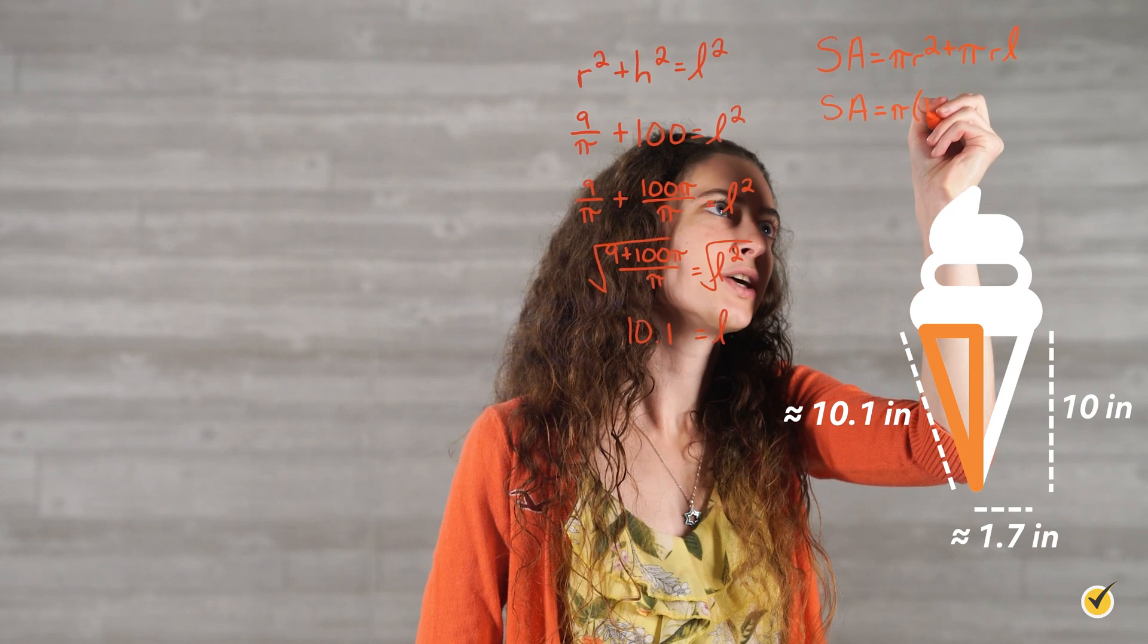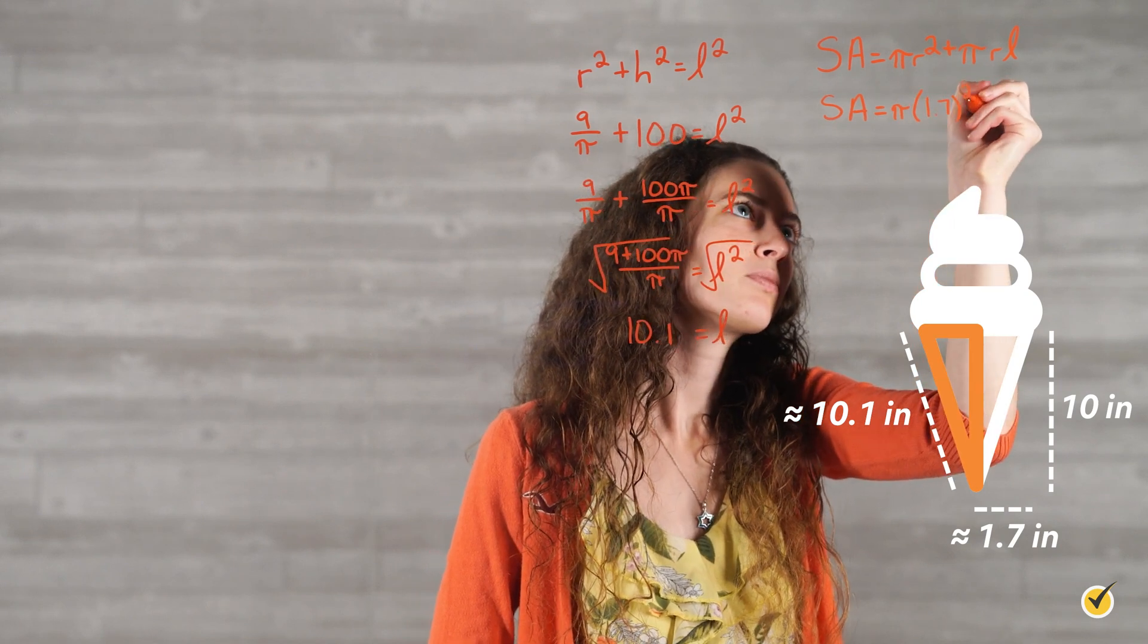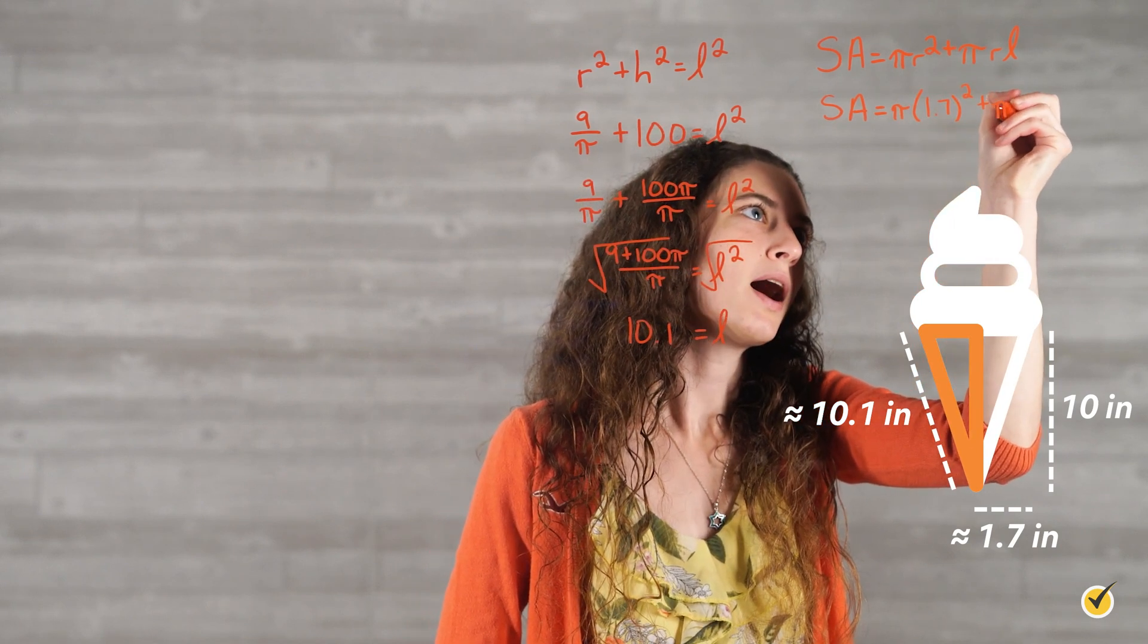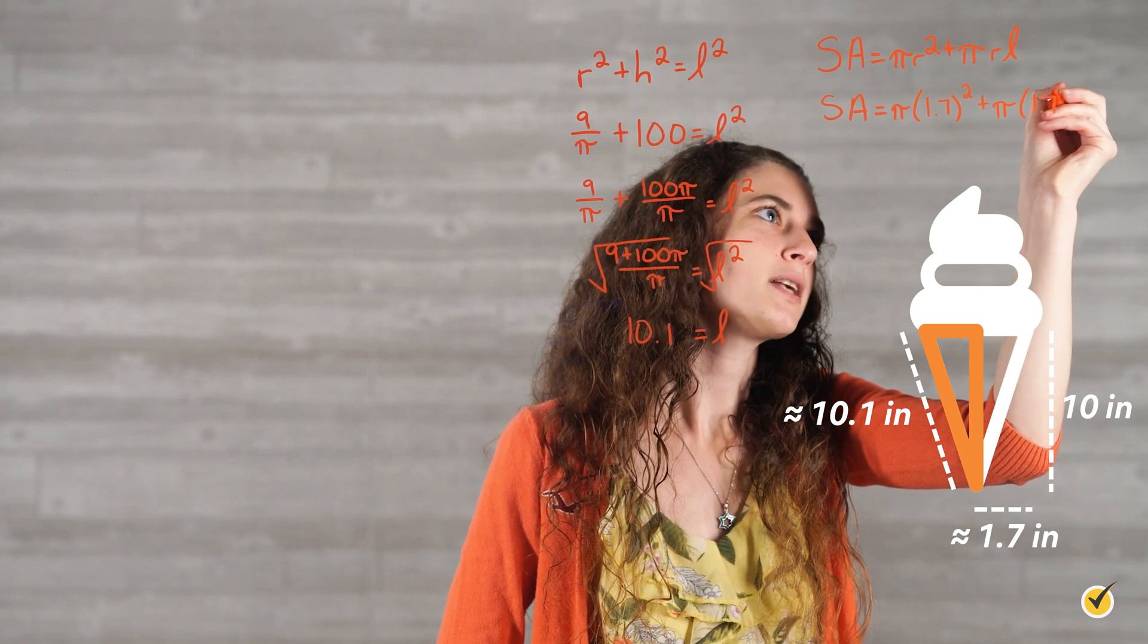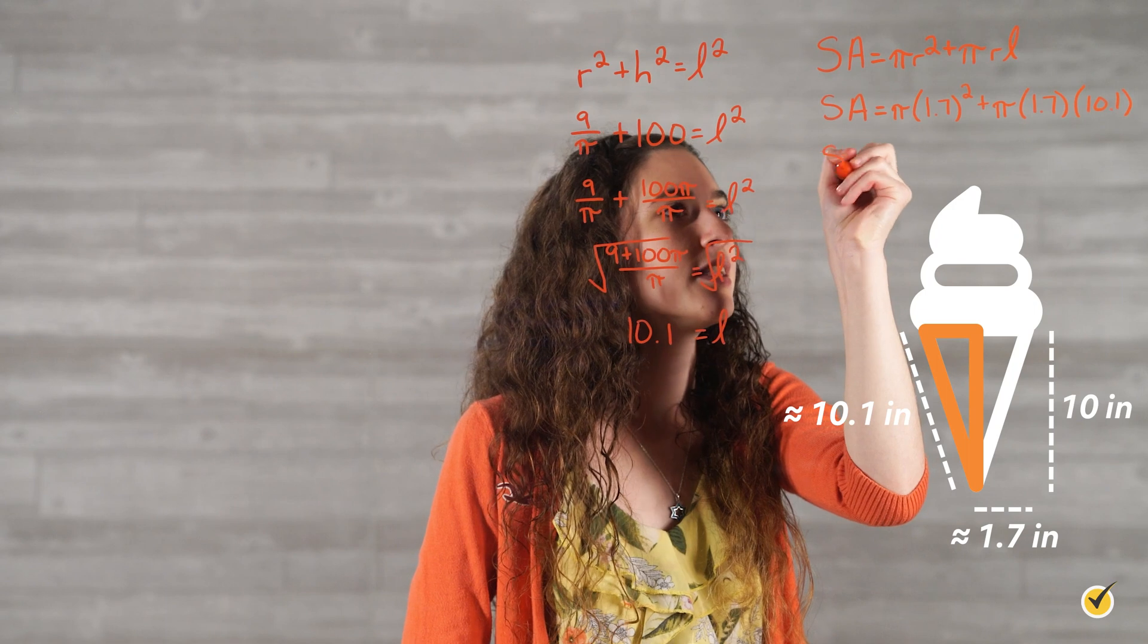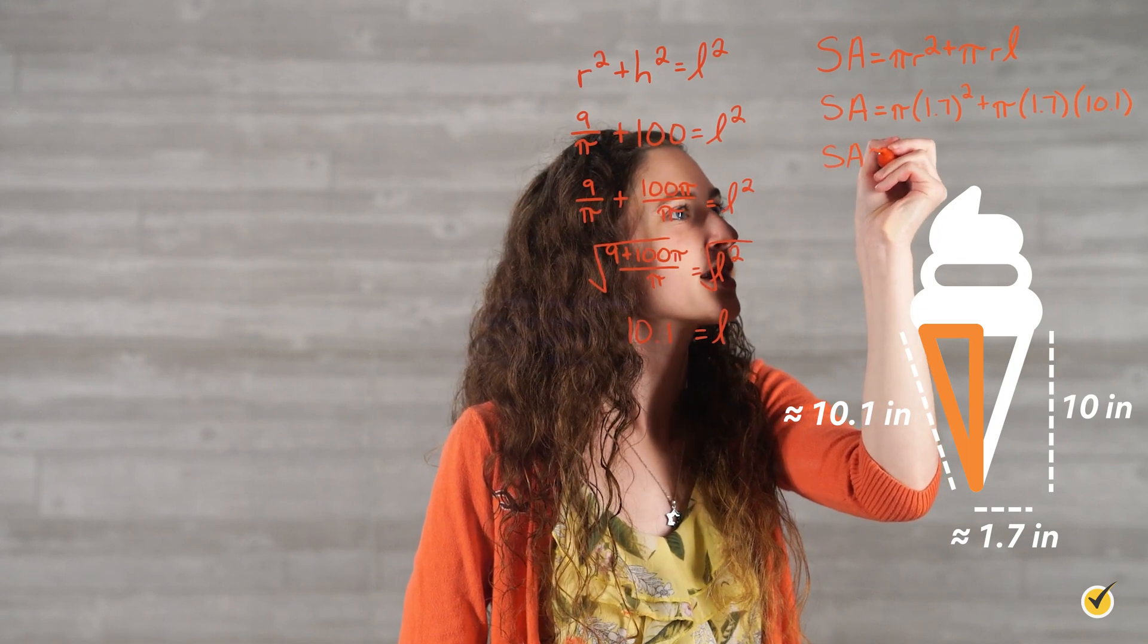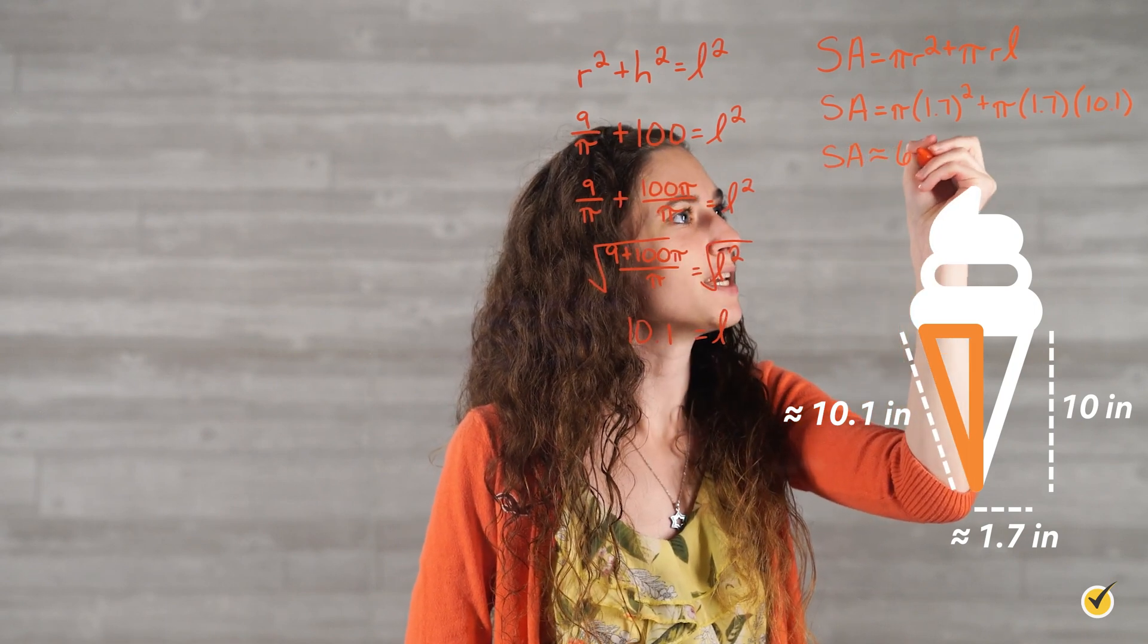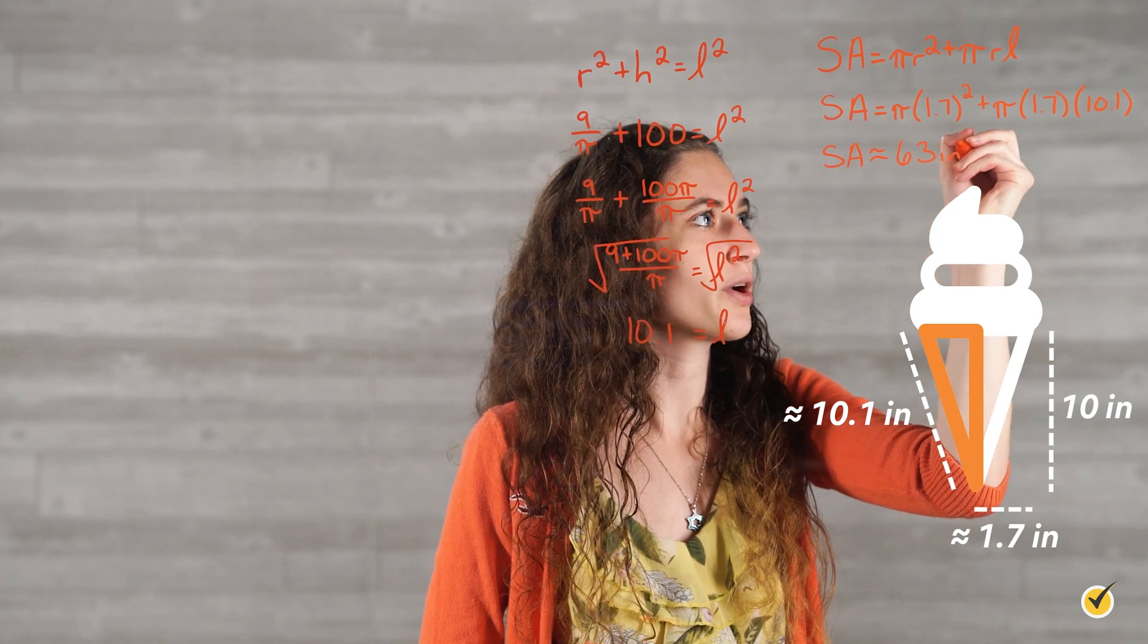R is approximately 1.7 plus pi times 1.7 times 10.1. Then, if you plug this into a calculator, you'll get that surface area is approximately equal to 63 square inches.